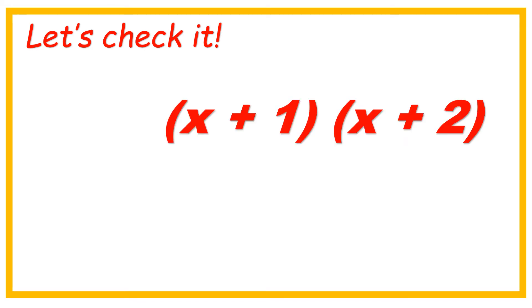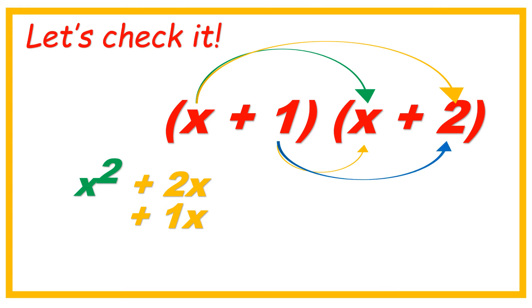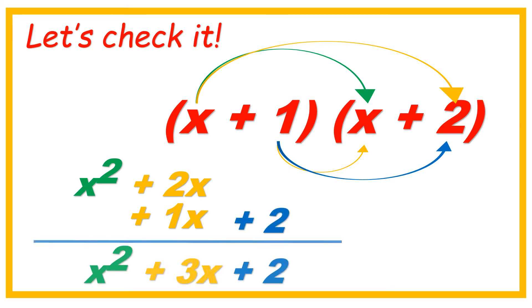Now let's check it! x plus 1, x plus 2 — we're going to use the FOIL method. x times x — the F, the first — the answer is x squared. The O, the outer part: x times 2 is plus 2x. The I for inner: 1 times x is plus 1x, or positive x. And the L, the last term: 1 times 2 is 2. x squared plus 3x plus 2 — we got it!